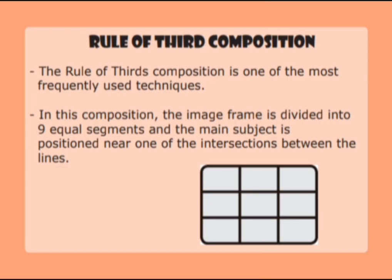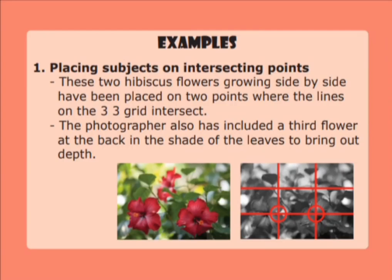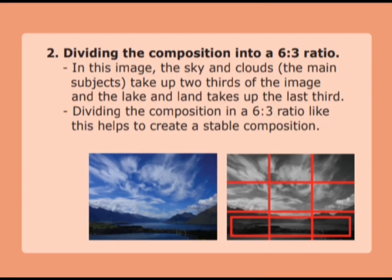We proceed to rule of thirds composition. The rule of thirds composition is one of the most frequently used techniques. The image frame is divided into nine equal segments and the main subject is positioned near one of the intersections between the lines. For example, placing the subject on intersecting points: these two hibiscus flowers growing side by side have been placed on two points where the lines on the three-part grid intersect. The photographer also included a third flower at the back in the sheet of the leaf.